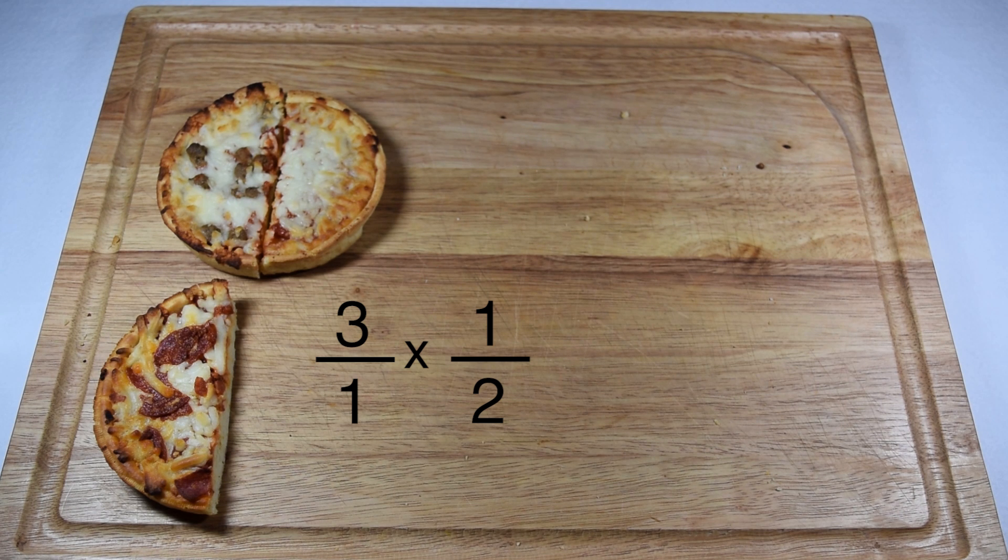Now we can multiply. Numerator times numerator, or three times one gives me three, and denominator times denominator, or one times two gives me two, gives us the improper fraction three halves.